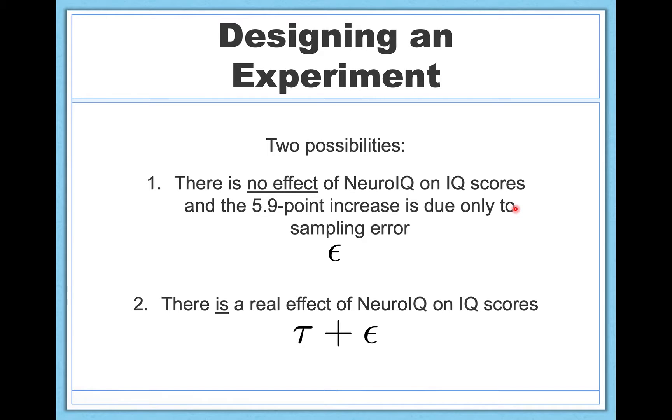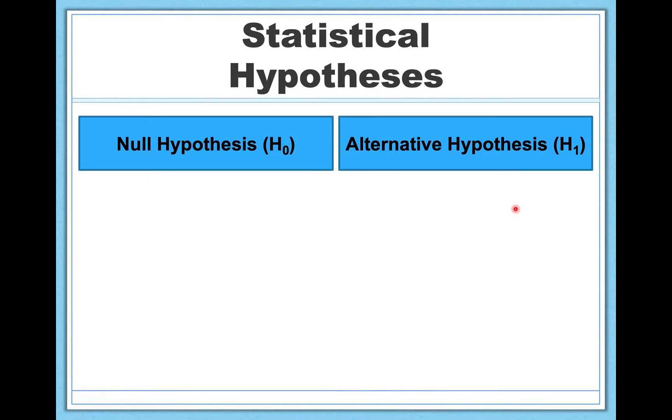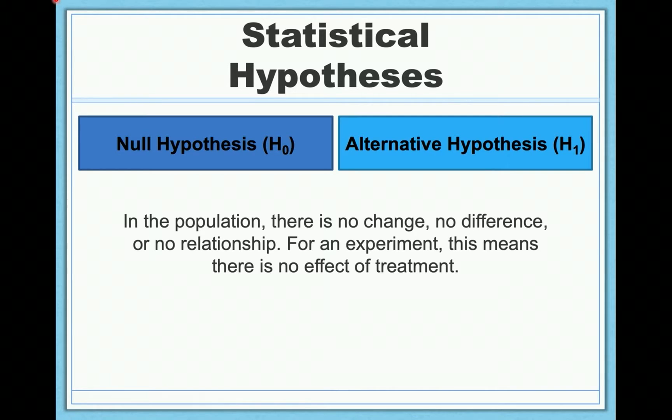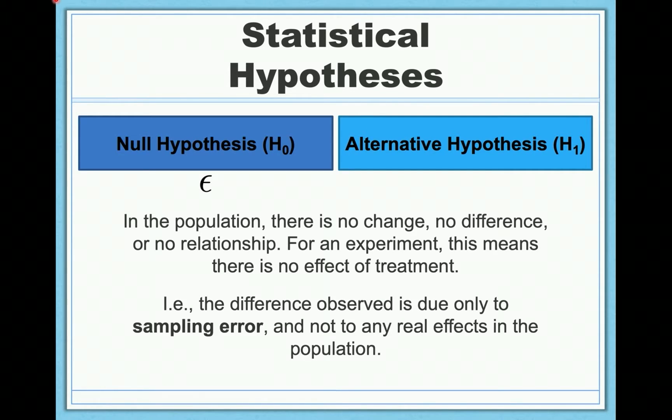And these two possibilities map on really well to our two statistical hypotheses, which we call the null hypothesis and the alternative hypothesis. So let's start with the null. The null hypothesis states that in the population, there's no change, no difference, no relationship, and essentially no effect. The null states there's nothing going on. More specifically, it states that any difference we do see in our sample is due only to sampling error, epsilon, and it's not actually due to any real effects in the population. So that's the null.